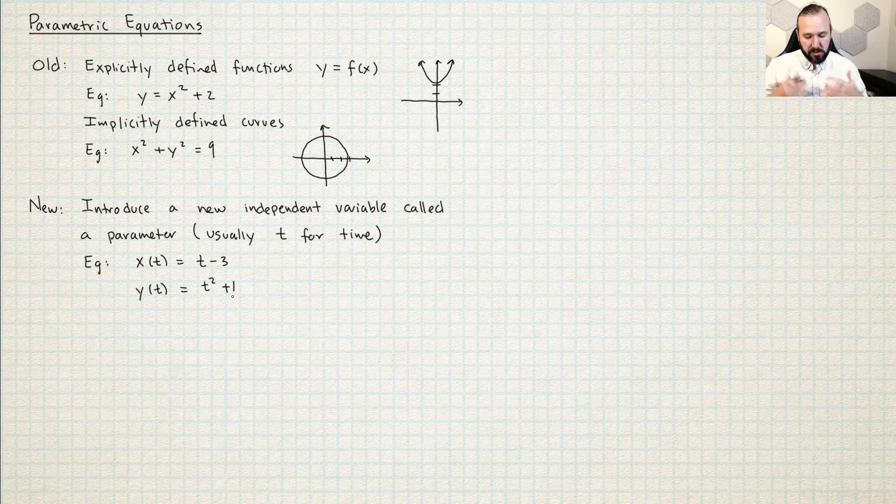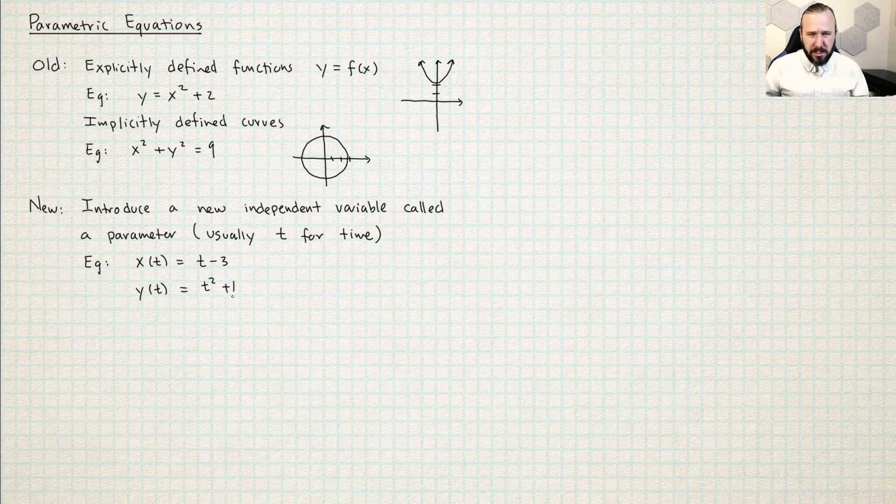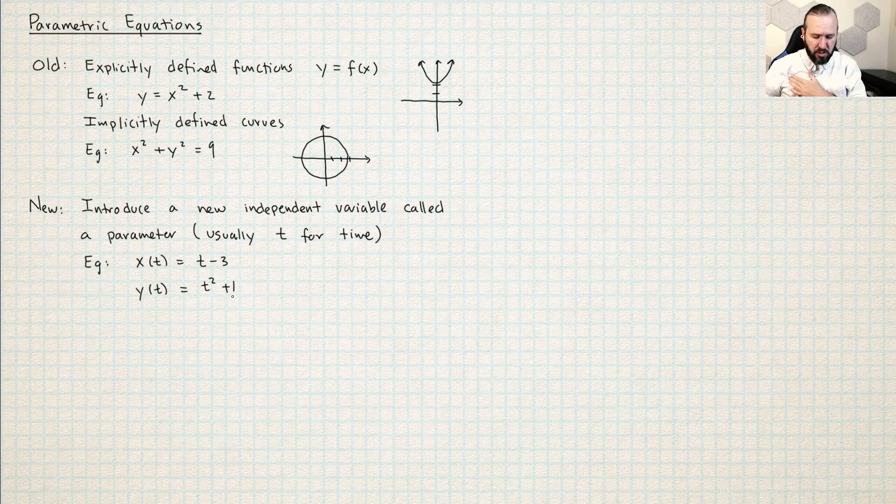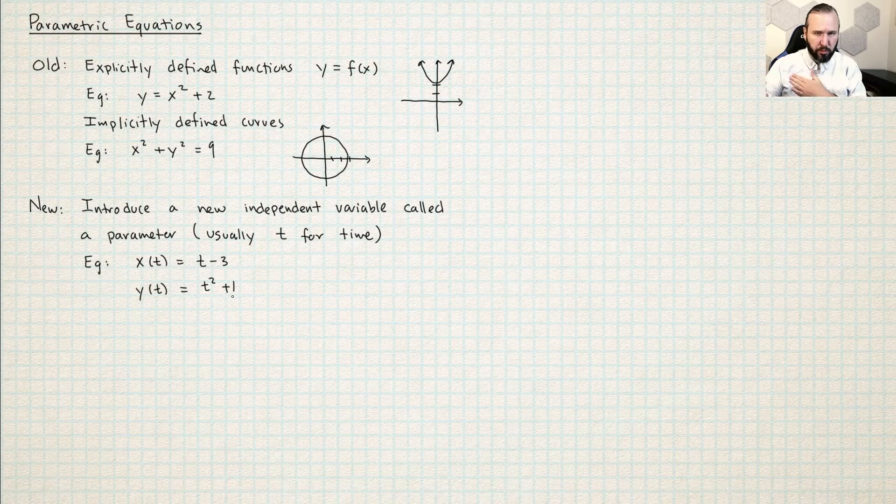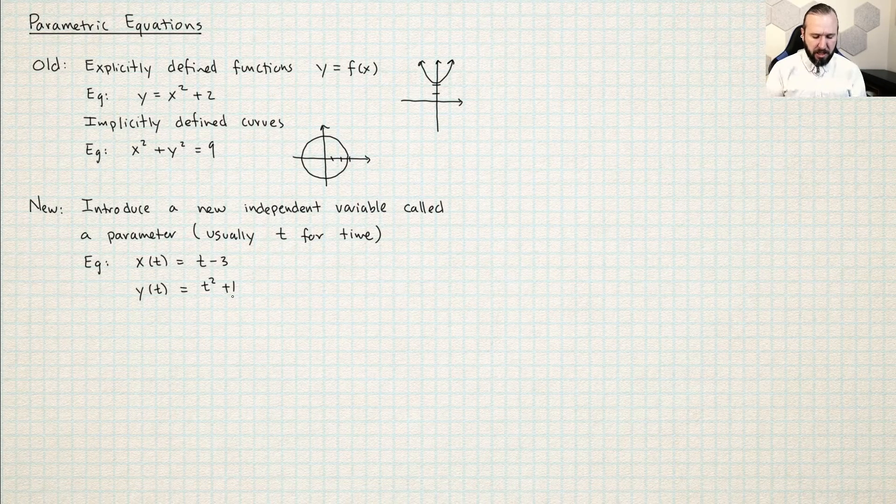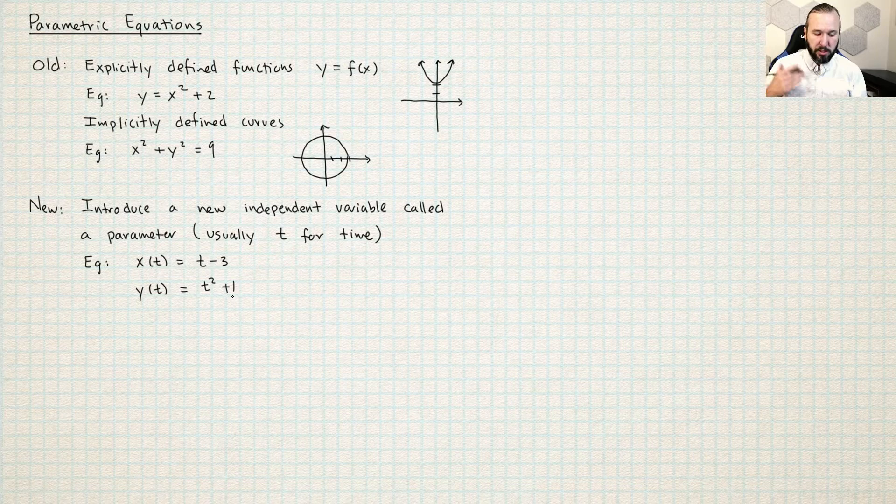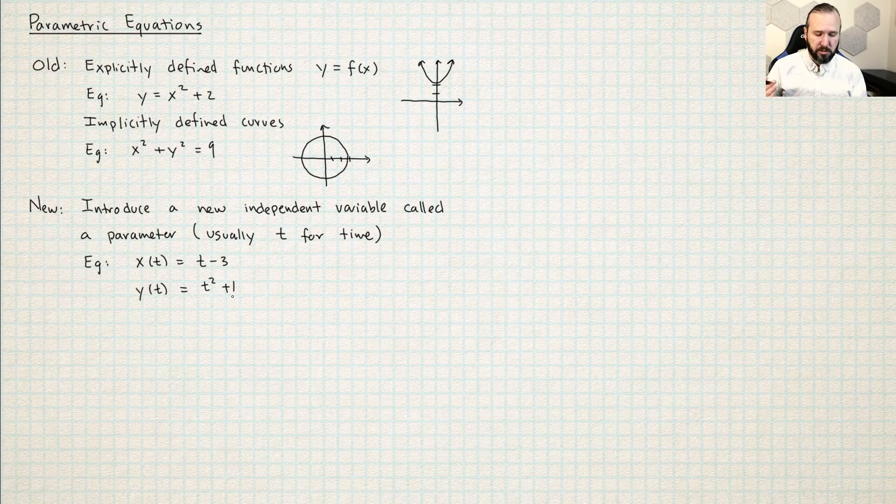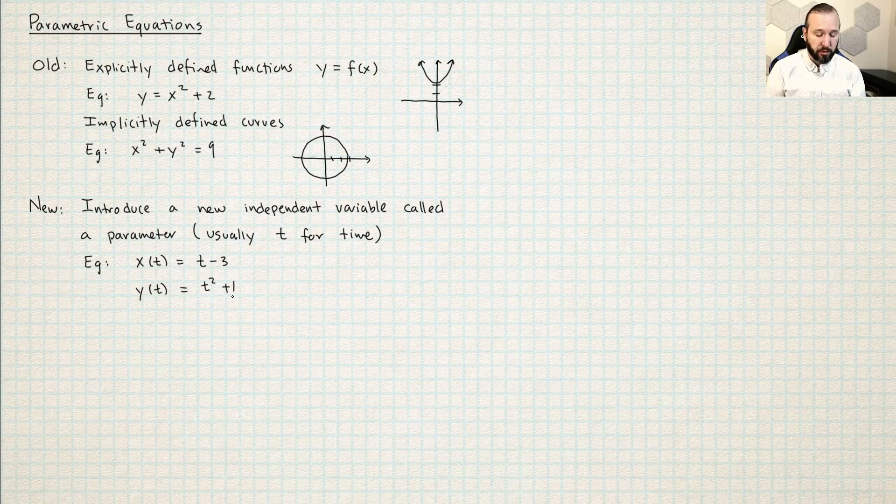So it's natural to ask, why are we doing this? Why are we making this change? So I want to go over really kind of the mathematical reasons why using parametric equations is going to be more useful for us.